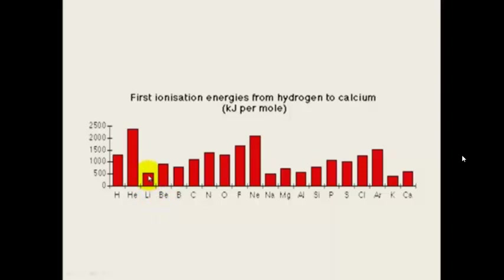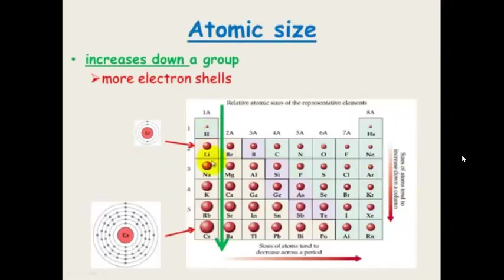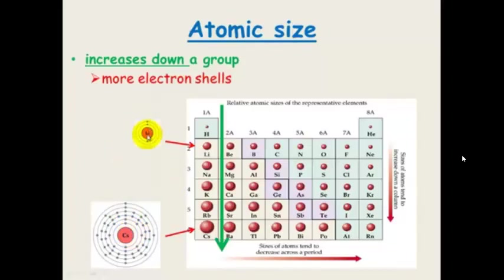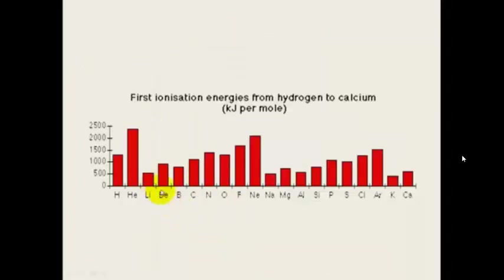Lithium is slightly higher than sodium, which is slightly higher than potassium as we go further down the periodic table. As we go further down, the size of the atom is increasing. Looking at group 1, lithium's electron is a lot closer to the nucleus, so it is harder to remove than the electron in cesium's 6th shell. Cesium is happy to get rid of that electron because it is so far away from the nucleus with not much attraction. That is why ionisation energy decreases as you go down the groups.